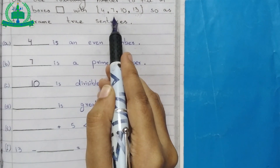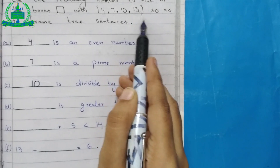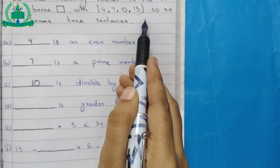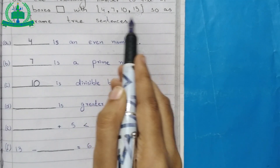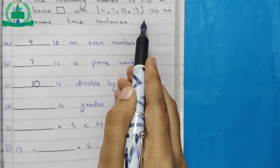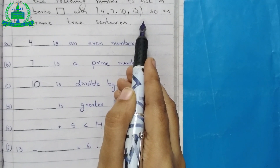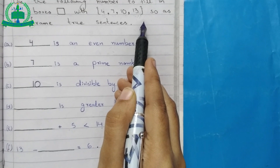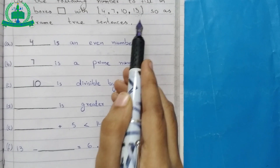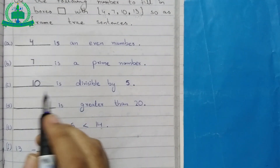D: From the options 4, 7, 10, 13, there is no number greater than 20. So we mark a cross.